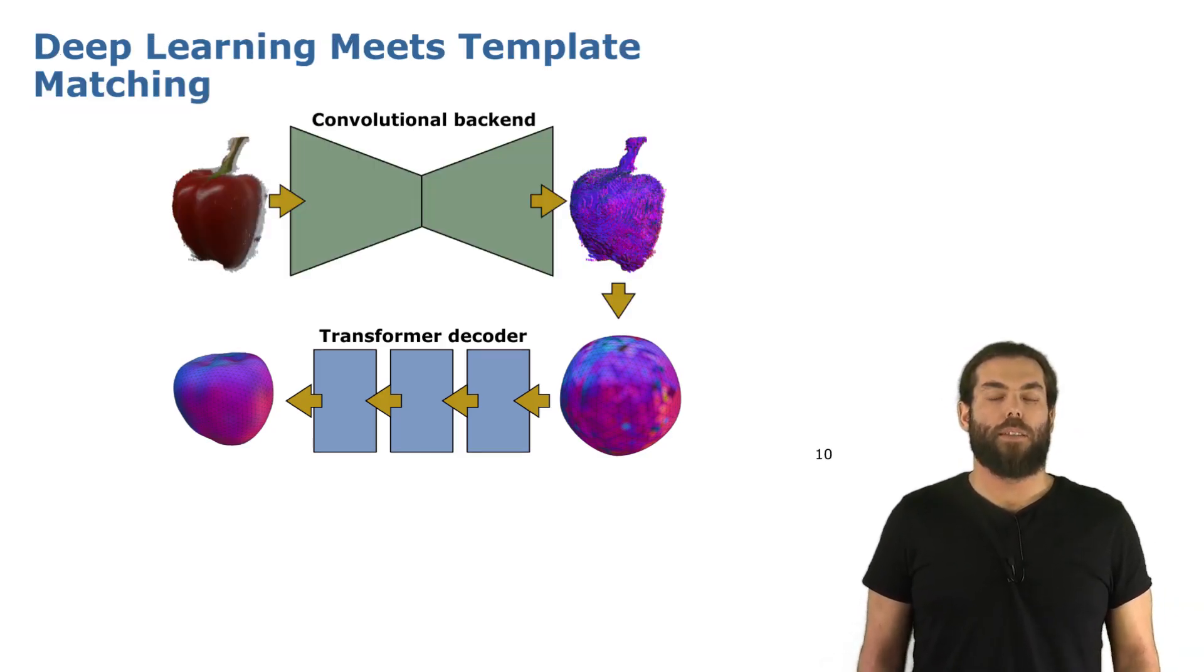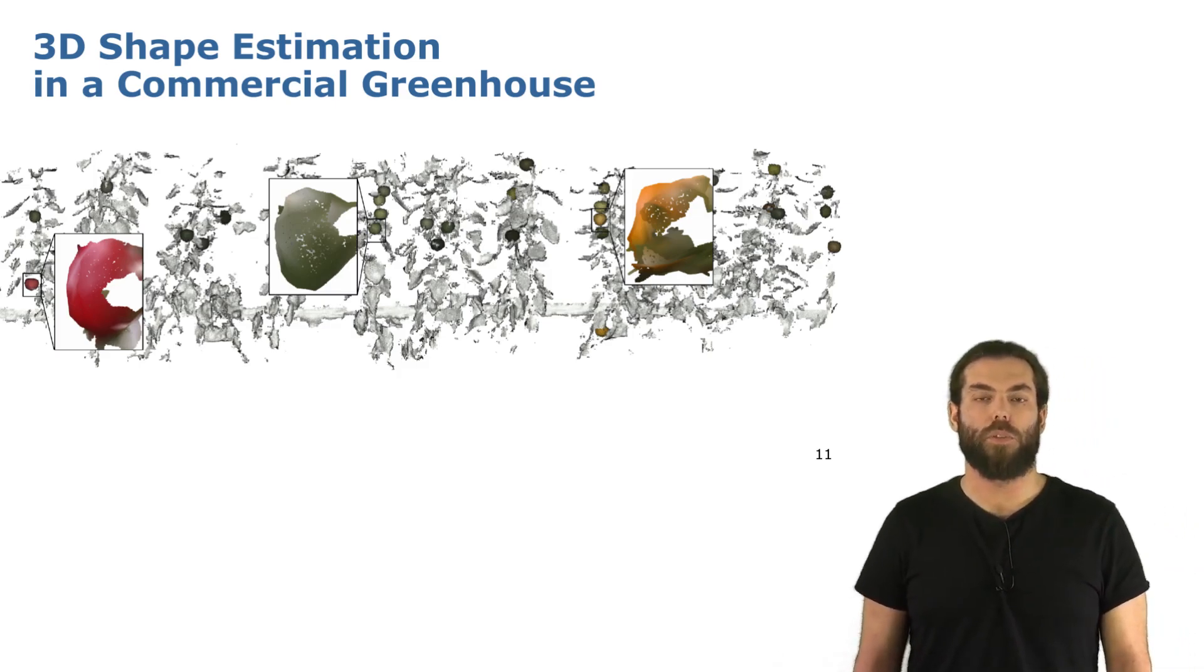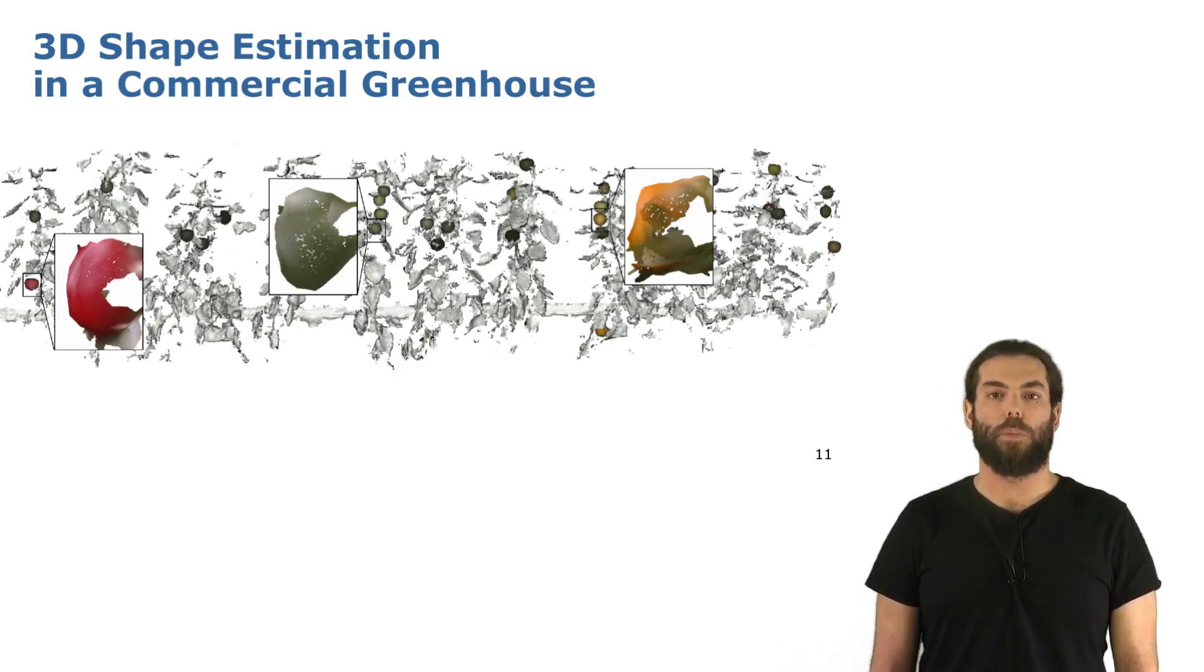So to summarize, our approach combines the benefits of deep learning with the benefits of template matching. Now let's look a bit at the results. So we test our approach on different datasets, different fruits, sweet pepper and strawberries mainly. Here you see an example of a sweet pepper greenhouse in Bonn where we have done some experiments.